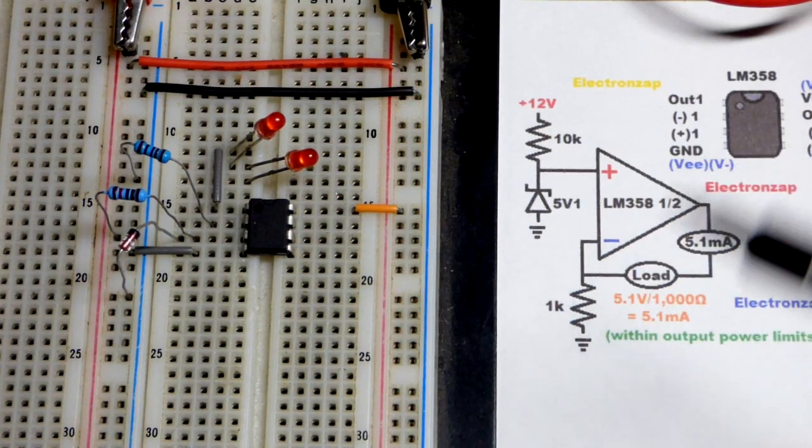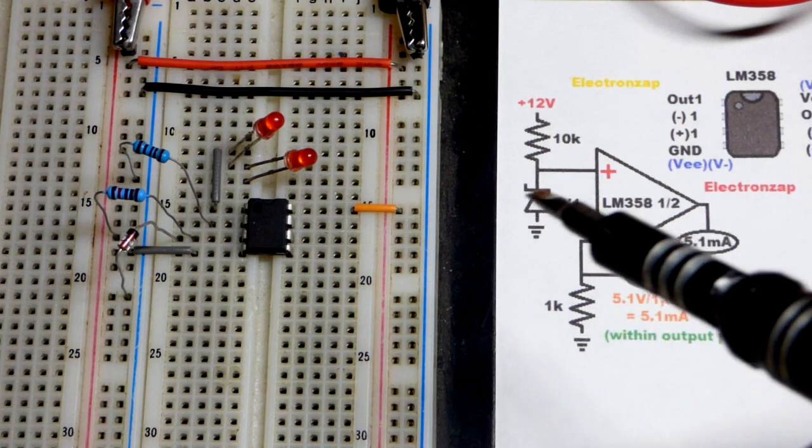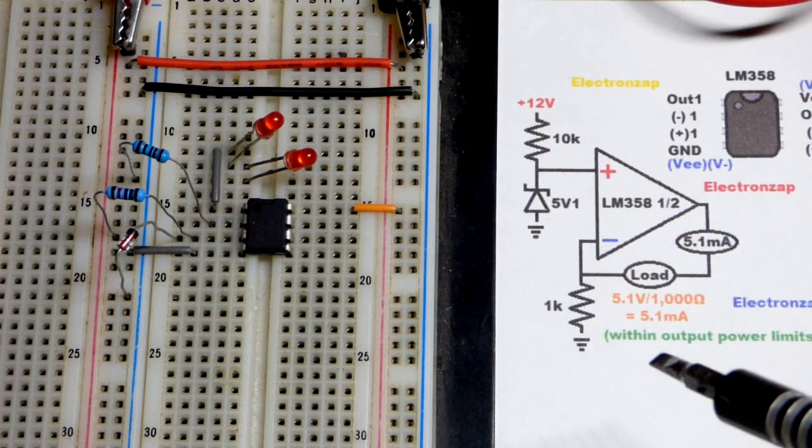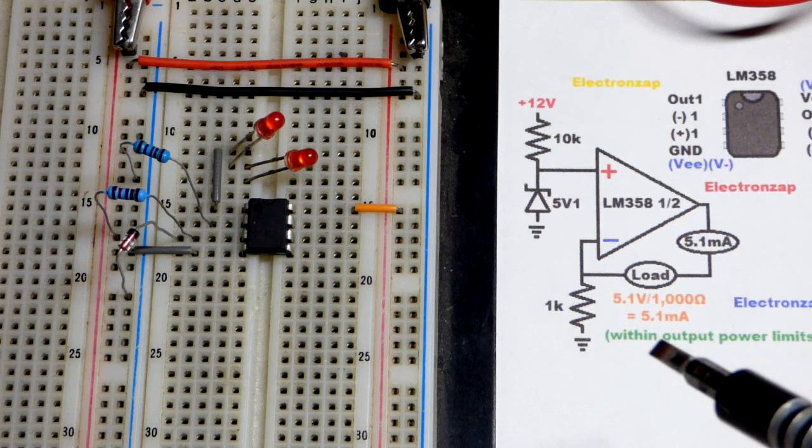And now of course I turned off the multimeter. If you accidentally measure current when you didn't mean to you'll likely blow a fuse, but in any case I'm not going to show all that.